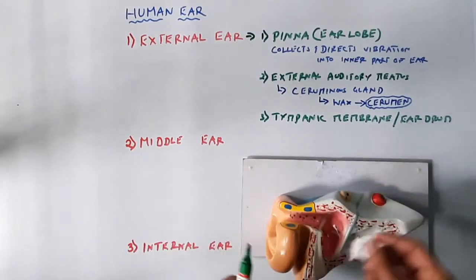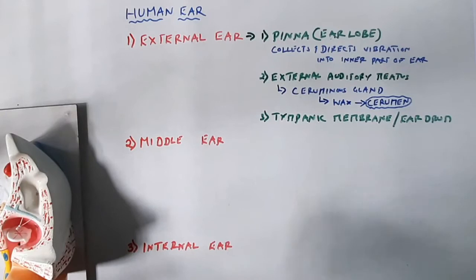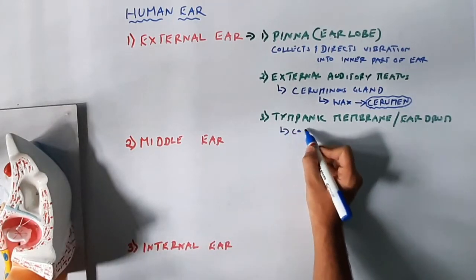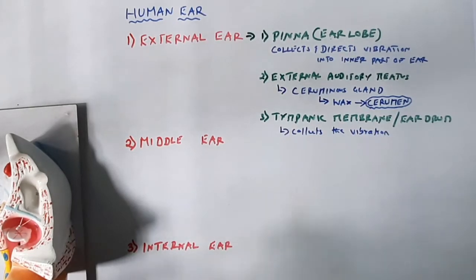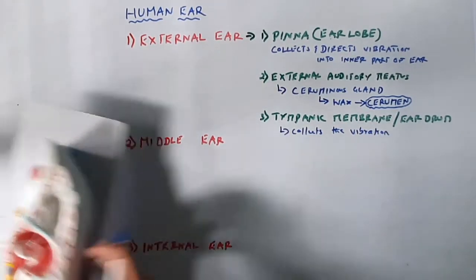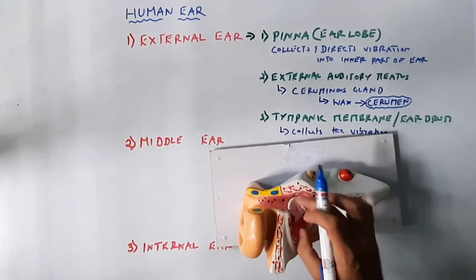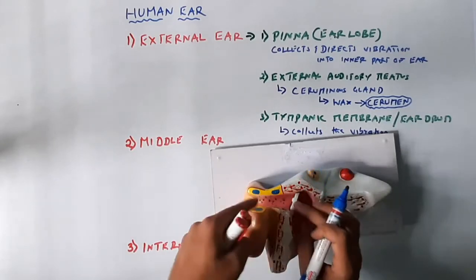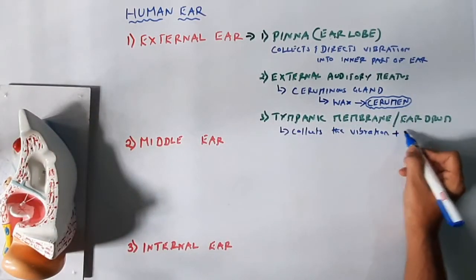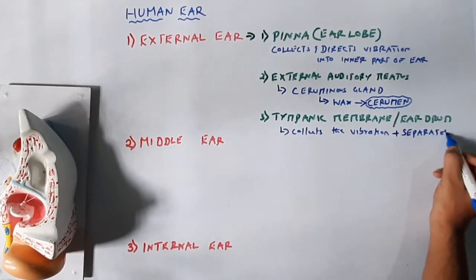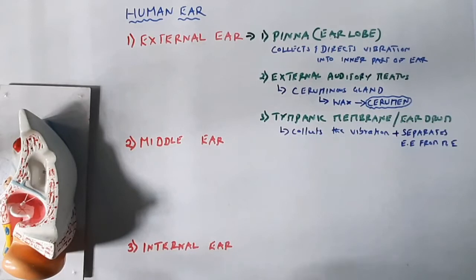The tympanic membrane is very thin. If it is ruptured, you cannot hear any voice or noise. Its function is to receive or collect the vibration from the auditory meatus. Importantly, the tympanic membrane separates the external ear from the middle ear — it acts as a kind of barrier, though it still belongs to the external ear.